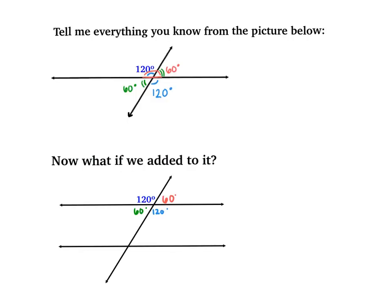Now let's add another line below it so we have two parallel lines cut by a transversal. I already copied over our answers from above. If we look at this diagram closely, we see our first group of angles right here — same as what we had above — and then this other group of angles down here. They look eerily similar to each other, and that's because they are.